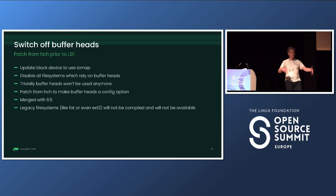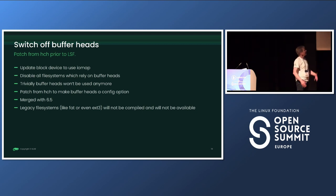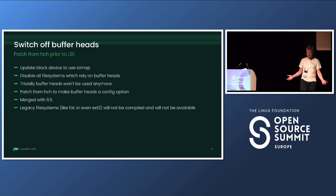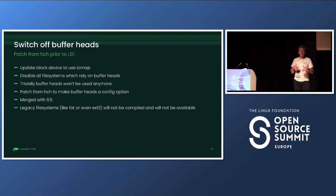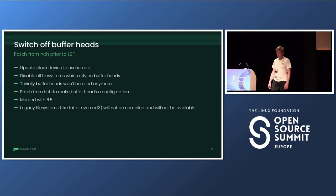Alternatively, you could just compile out all file systems which use buffer heads — buffer heads would then be switched off implicitly. Christoph Helwig had a patch set doing exactly that, which went into kernel 6.5. The problem is that some commonly used file systems like FAT or ext3 would no longer work because they haven't been converted, so this approach has real limitations.